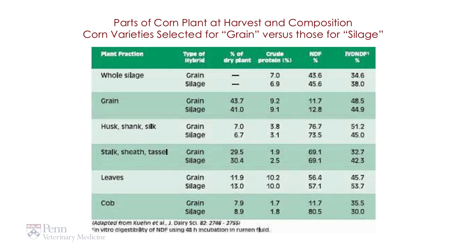Looking at this slide, what is the difference? We really have two types of corn: corn grown for grain, which primarily has large ears relative to the stalk, or corn grown for silage. About 90% of the corn grown in the United States is grown for grain. However, if we look at the whole plant — the whole silage — whether it's for grain or for silage, it has a similar crude protein content, a similar fiber content, NDF or plant cell wall, and a similar digestibility.